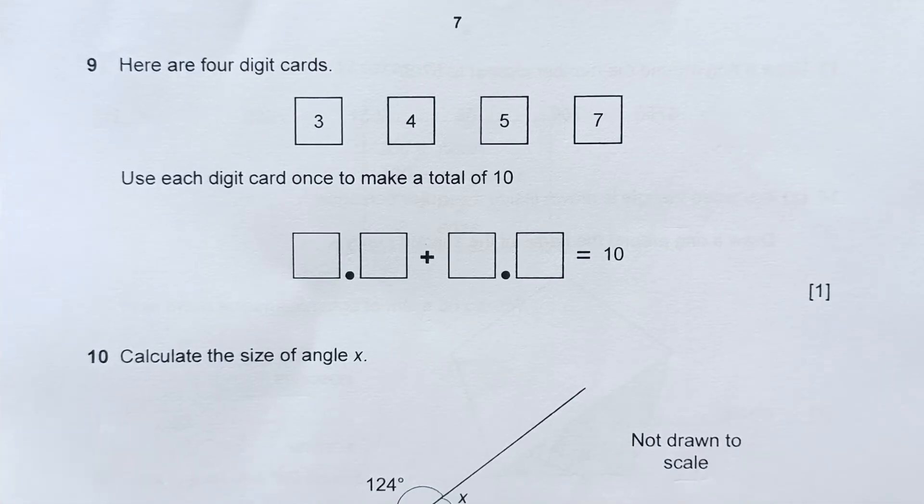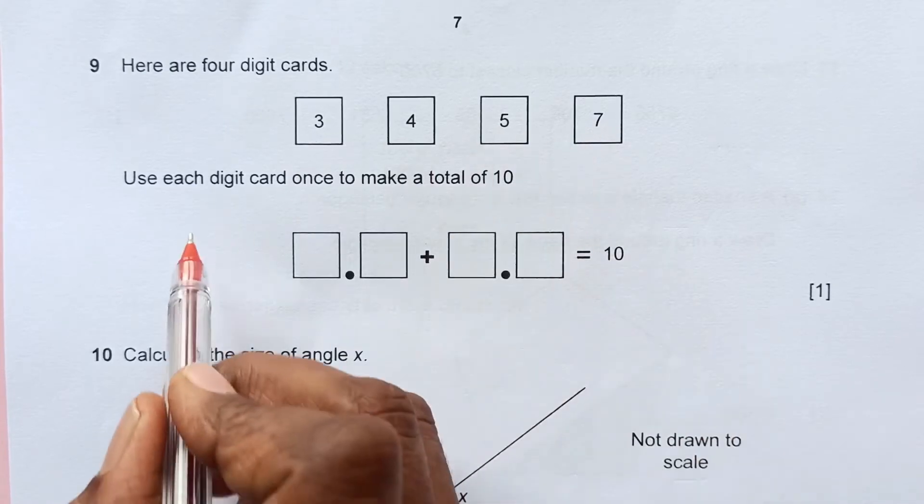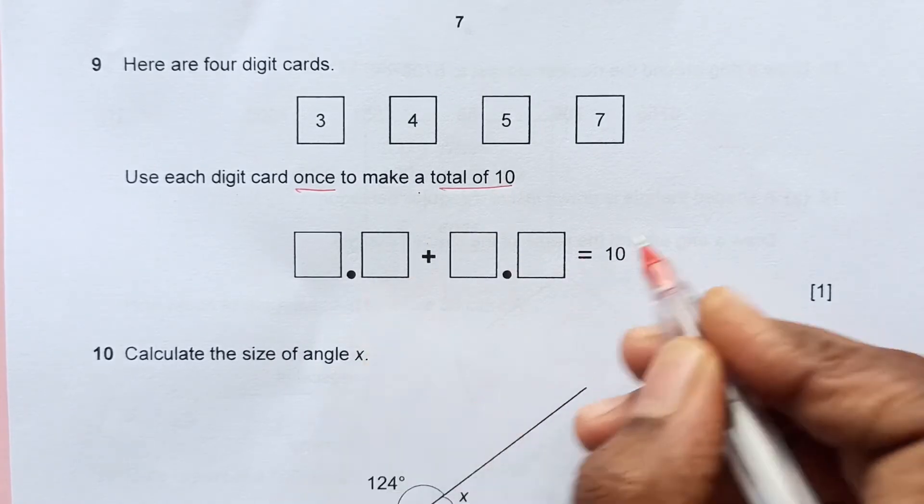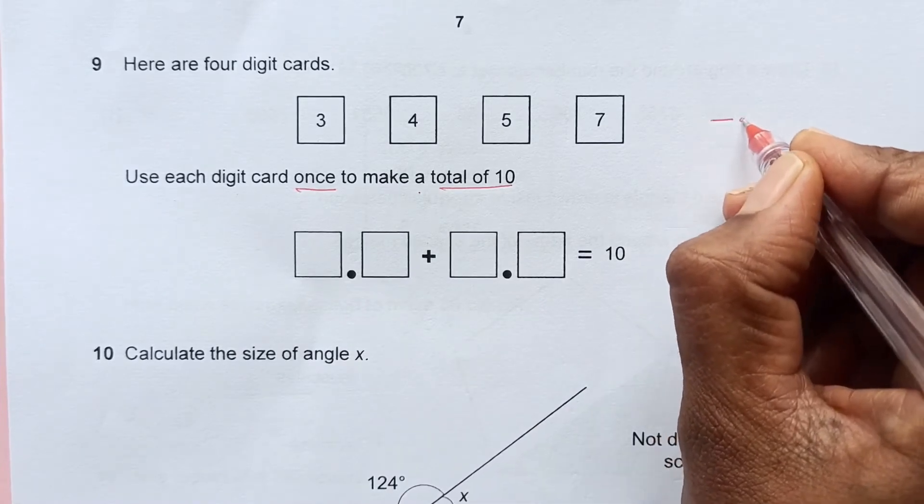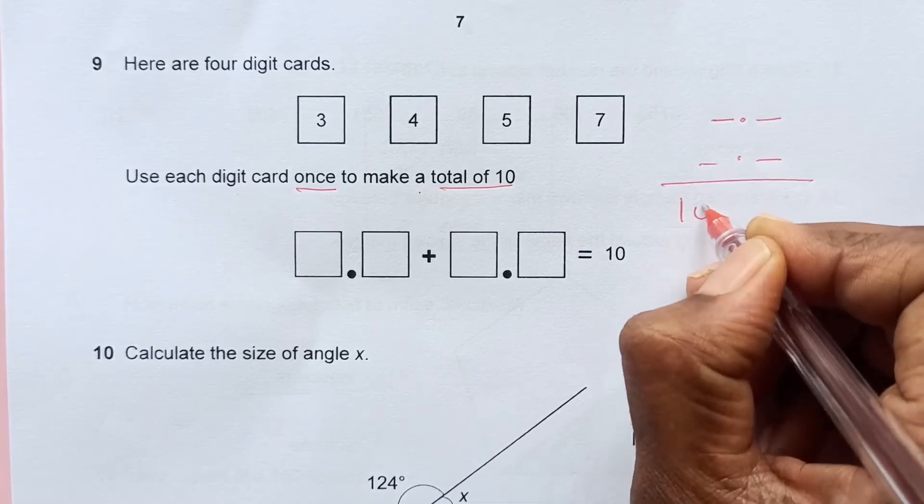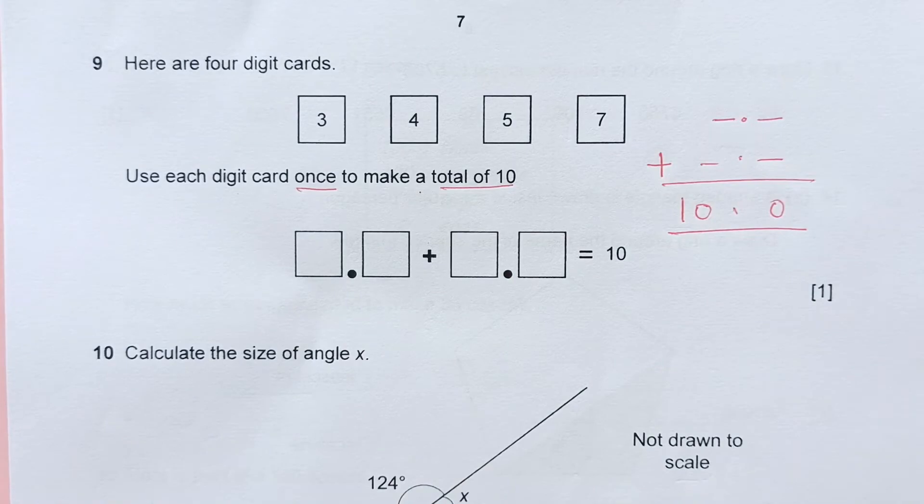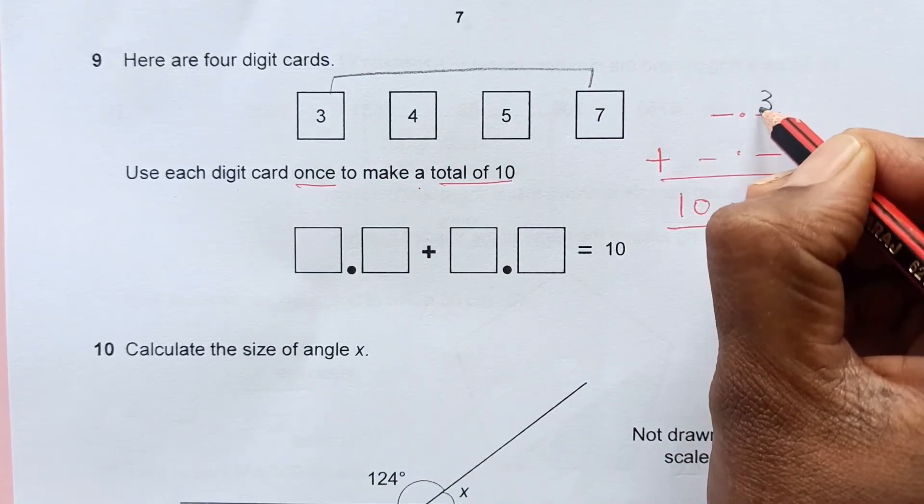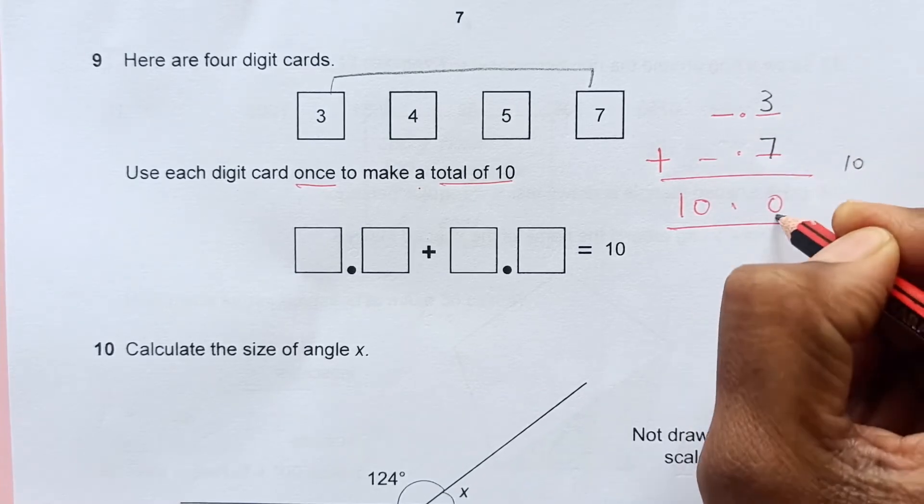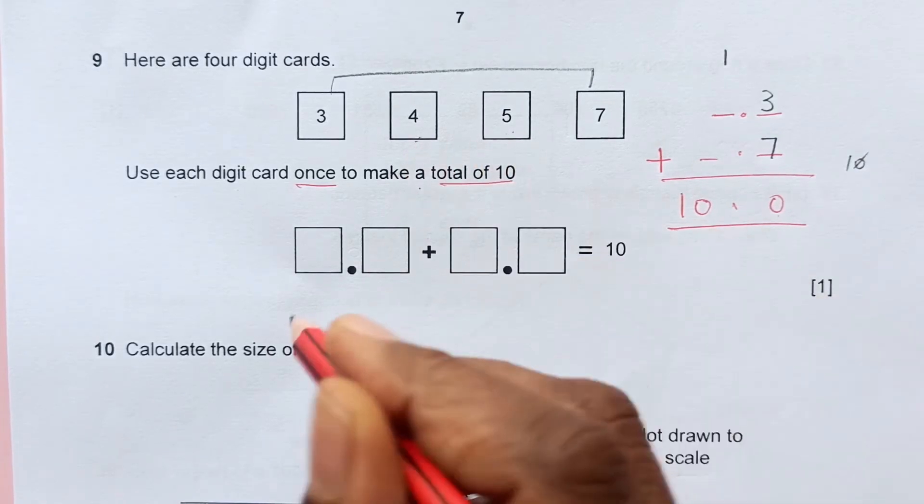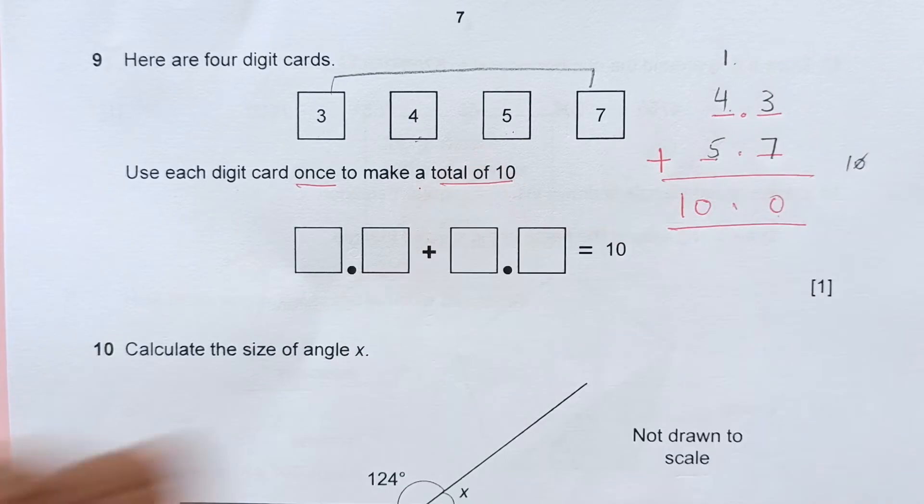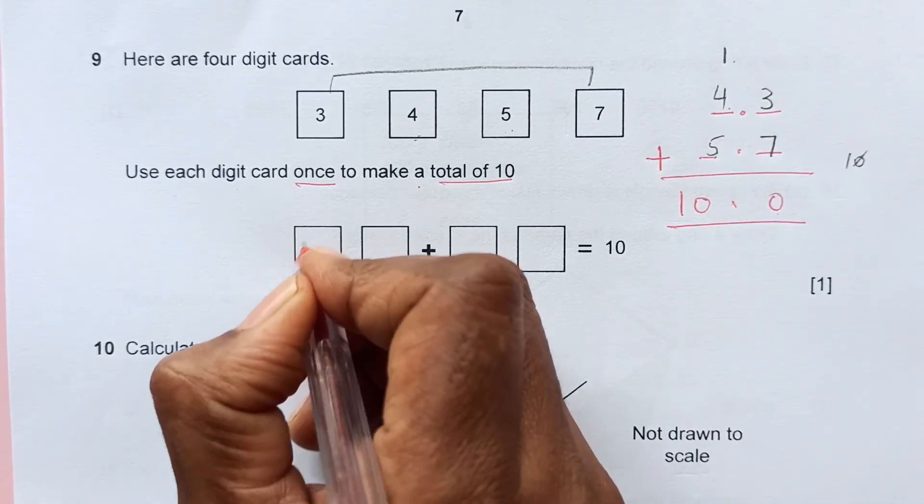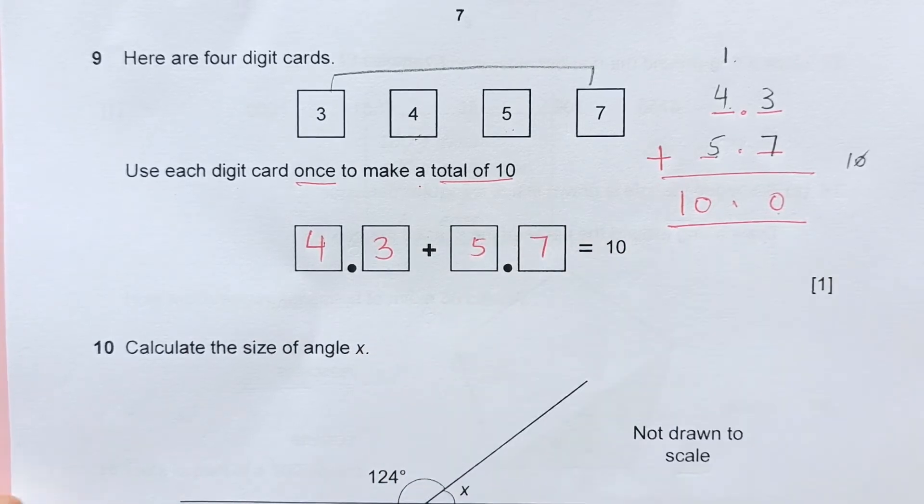Number 9. Here are 4 digit cards: 3, 4, 5, and 7. Use each card once to make a total of 10. We need our answer as 10. We have decimal here, so we need to add them to get 10. If you add 3 and 7, that's 10. So if I write 3 here and 7 here, 7 plus 3 is 10, 1 goes, 0 goes here and 1 will carry. Now we are left with 4 and 5. 4 here and 5. 5 plus 4 is 9 plus 1 is 10. It can be other way around: 4.3 plus 5.7 will make 10.